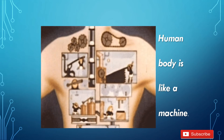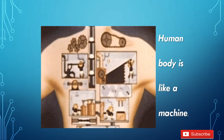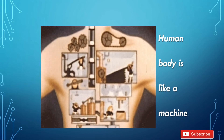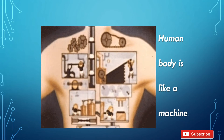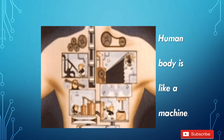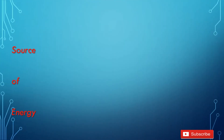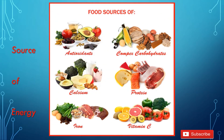From our childhood, we have listened that the human body is like a machine. And for the working of a machine, we need some amount of energy. For that energy, we need food. You can say that food is the source of energy. But there is a twist.